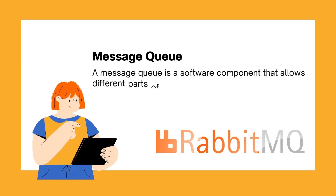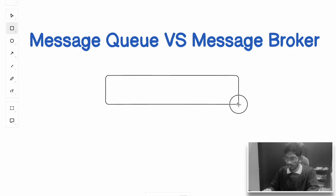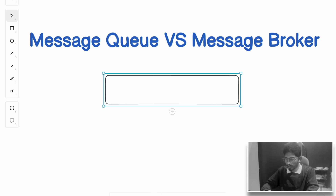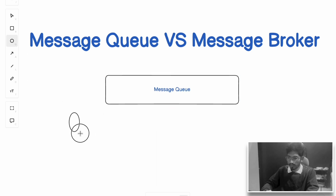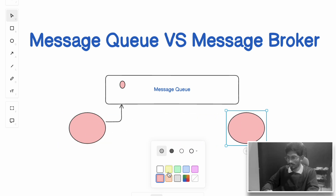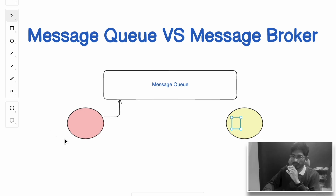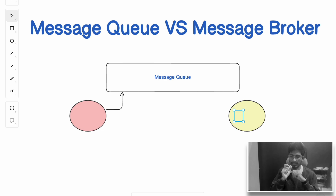A message queue is a messaging system where messages are sent to a queue and are processed by a single consumer. There will be a producer that sends a message to the message queue, and there will be a single consumer that consumes the message. As soon as the message is consumed by the consumer, the message is removed from the queue. This ensures guaranteed delivery of your message to the desired — and only one — consumer.